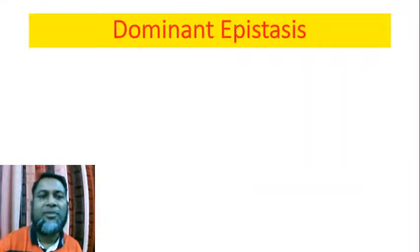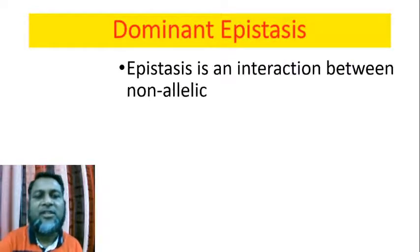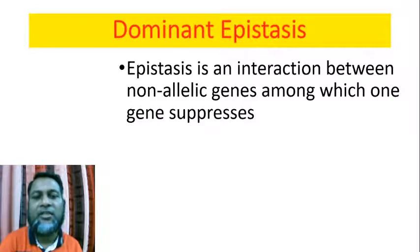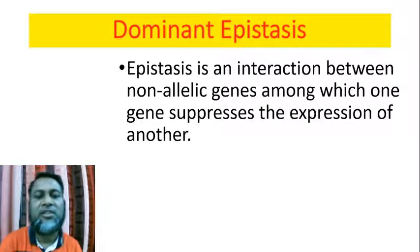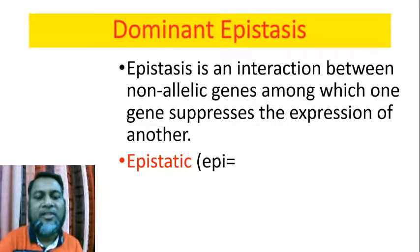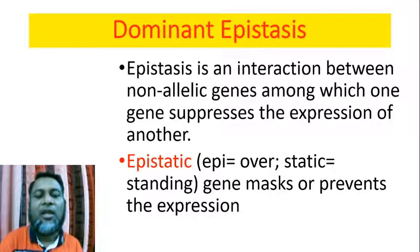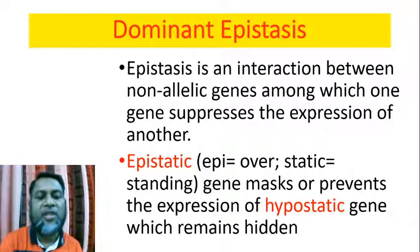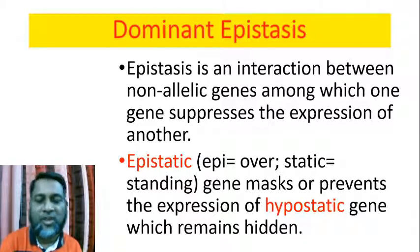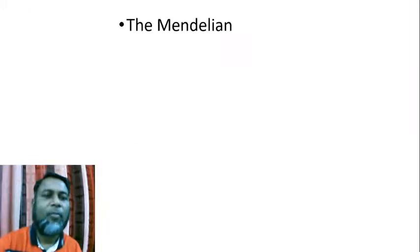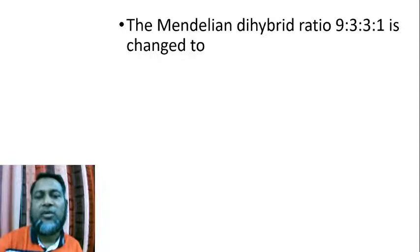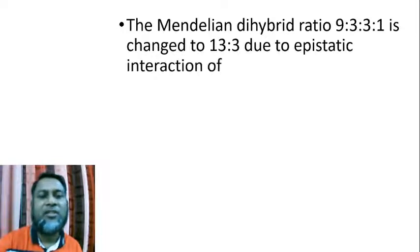Dominant epistasis. What is epistasis? Epistasis is an interaction between non-allelic genes among which one gene suppresses the expression of another gene. The epistatic gene — 'epi' means over, 'static' means standing — masks or prevents the expression of the hypostatic gene, which remains hidden or unexpressed. The Mendelian dihybrid ratio 9:3:3:1 is changed to 13:3 due to epistatic interaction of genes.